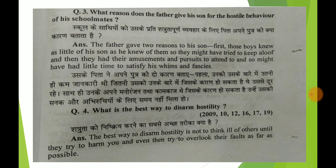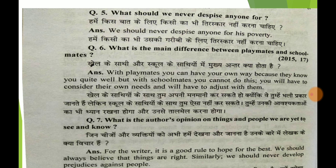Question 4: What is the best way to disrupt hostility? The best way to disrupt hostility is not to think ill of others until they try to harm you, and even then try to overlook their faults as far as possible. Satruta ko nishkriye karne ka sabse achha tariqa hai doosron ke baare mein bura na sochna, jabtak ki we tumhein nuksan pahunchane ka prayas nahi karte. Question 5: What should we never despise anyone for? We should never despise anyone for his poverty — hame kisi ka bhi uski garibhi ke liye tiraskar nahi karna chahiye.